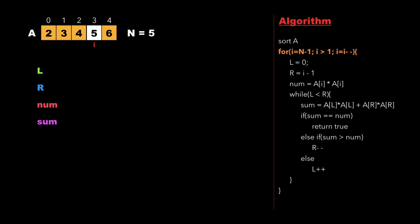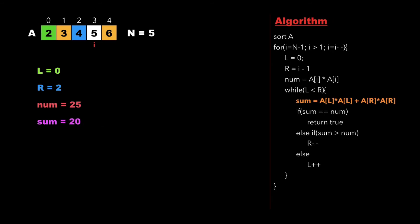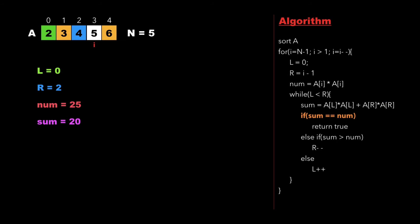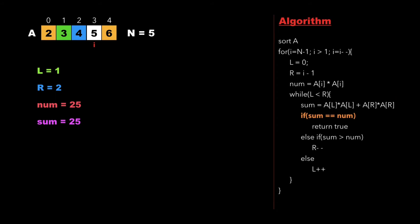Now i points to index 3, the element 5. We initialize l to 0 and r to i-1, and calculate num as 25. We check whether l is less than r. Since 0 is less than 2, we calculate sum as 20. We check whether 20 equals 25 — it does not, nor is it greater than 25, so we increment l. Now l points to index 1, and since 1 is less than 2 we calculate the new sum as 25. Since 25 equals 25, we return true.